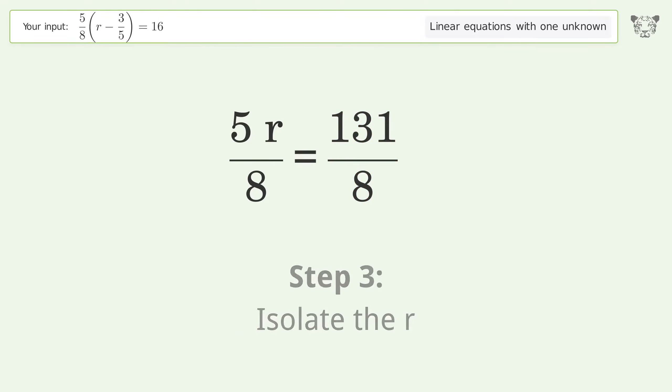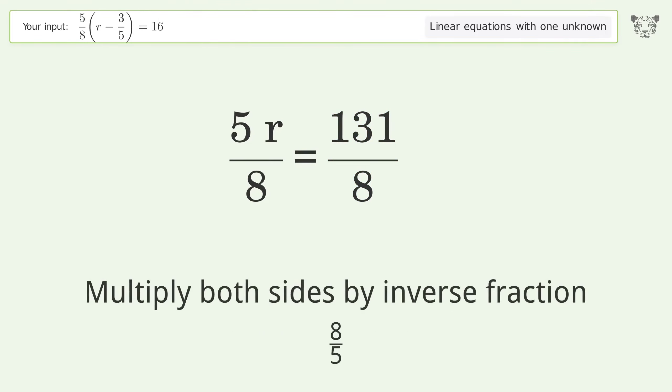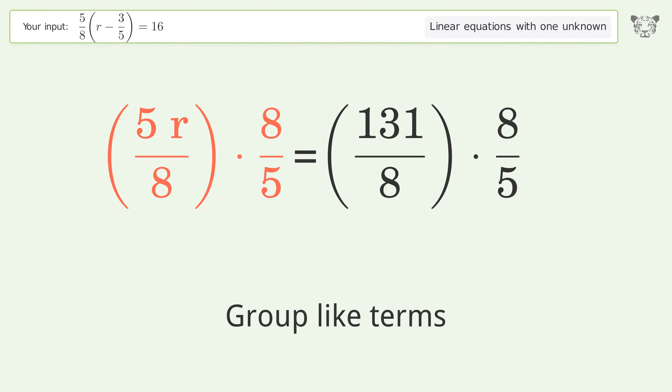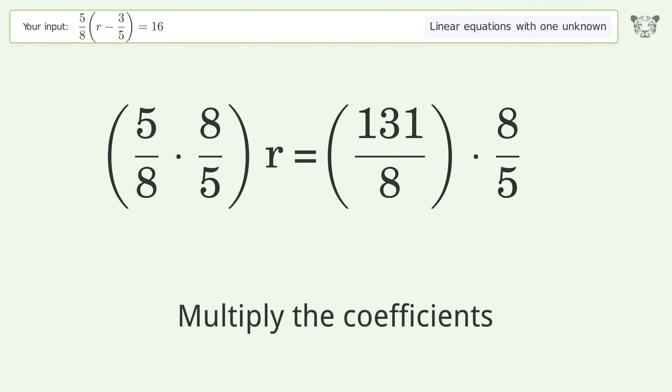Isolate the r. Multiply both sides by the inverse fraction 8 over 5. Group like terms. Multiply the coefficients.